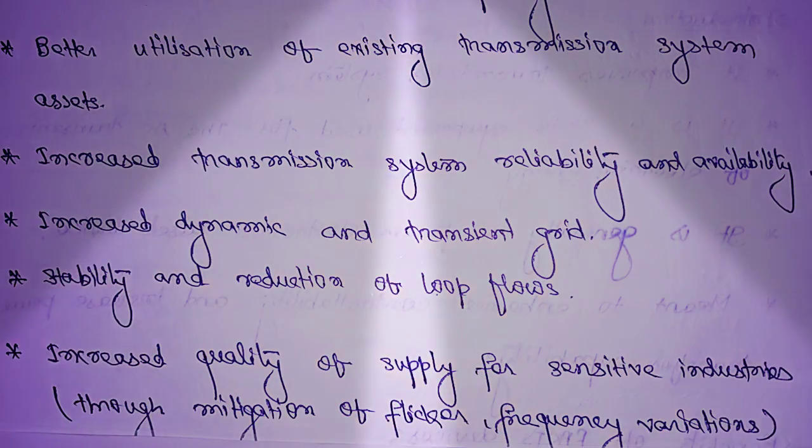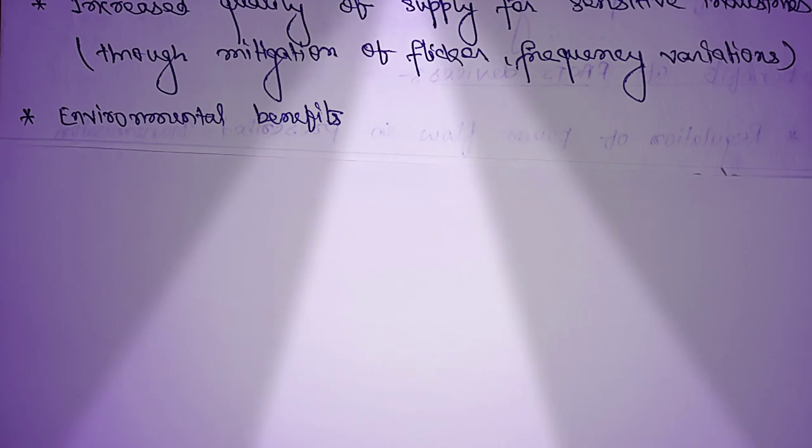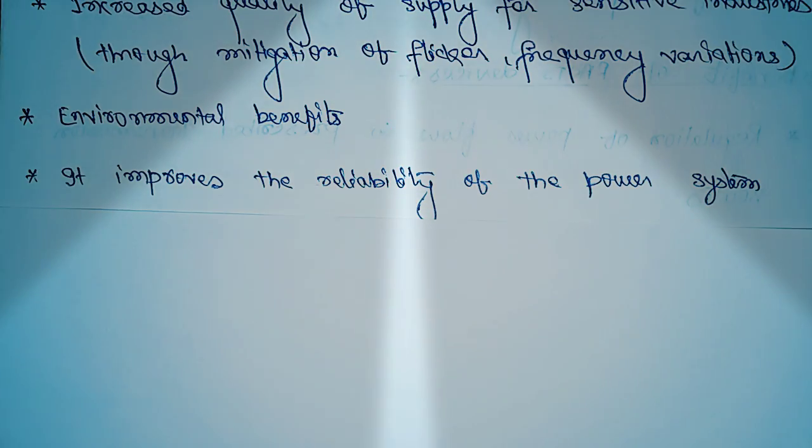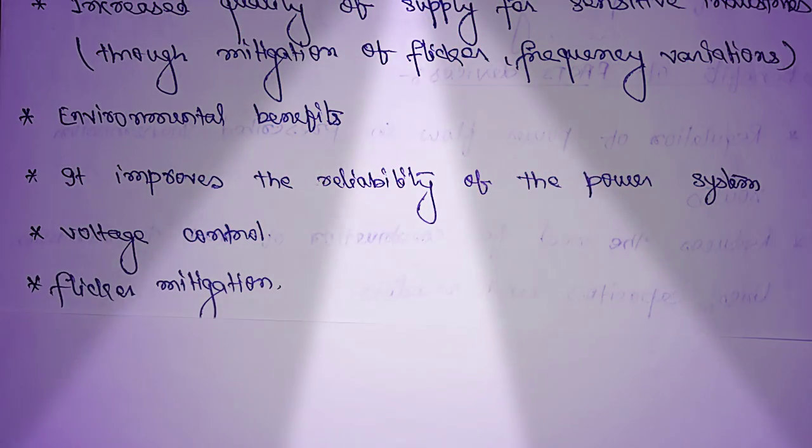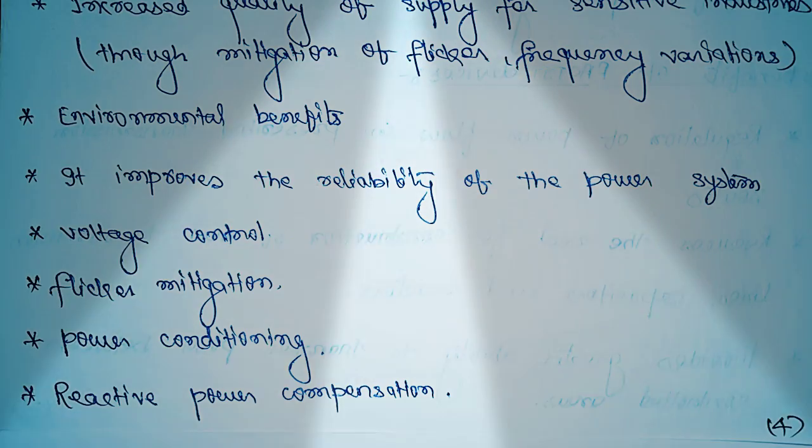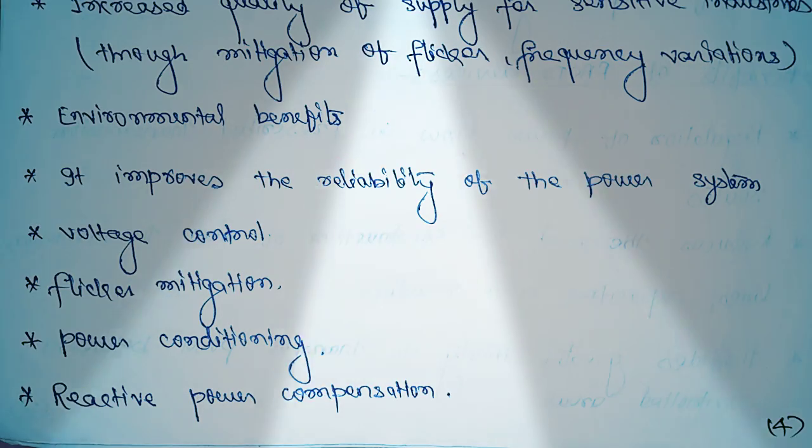Increased quality of supply for sensitive industries through mitigation of flicker and frequency variation. Environmental benefits. It improves the reliability of the power system, voltage control, flicker mitigation, power conditioning, and reactive power compensation. These all are the benefits of the FACTS devices. In the next video I will tell more about the FACTS devices types. Thank you.